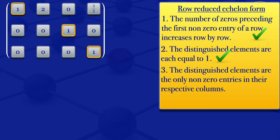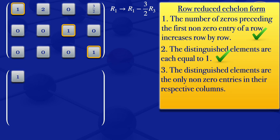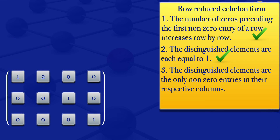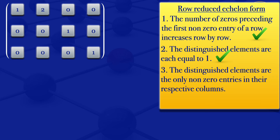So the elementary row operation is: transform row one to row one minus three over two times row three. We get another matrix: one minus zero gives one; two minus zero gives two; zero minus zero gives zero; then three over two minus three over two times one gives three over two minus three over two, which gives zero. Then for the second row, it's not changing: zero, zero, one, zero. The third row, not changing: zero, zero, zero, one. So the matrix we are having is 1, 2, 0, 0 / 0, 0, 1, 0 / 0, 0, 0, 1.